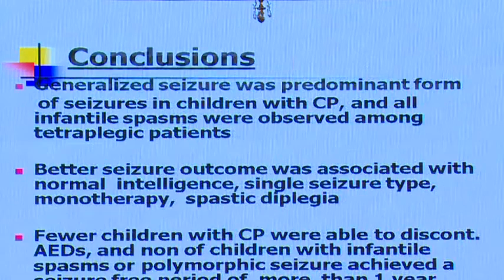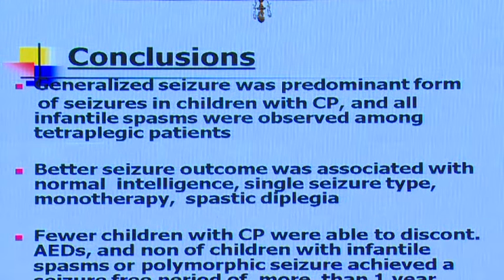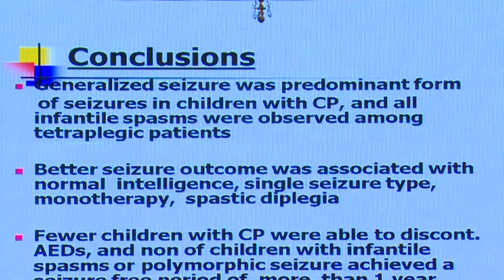Epilepsy in CP was associated with an earlier age of seizure onset than in the control group. Generalized seizures were the predominant form in children with CP, and all infantile spasms were observed among tetraplegic patients. Better seizure outcome was associated with normal intelligence, single seizure types, monotherapy, and spastic diplegia — so within CP groups, spastic diplegia carries better epilepsy prognosis.